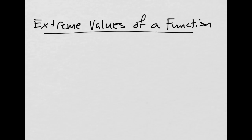We're going to talk about the extreme values of a function. That just means absolute maximums, absolute minimums, local maximums, local minimums, global, relative. Those are all meaning the same thing, and we'll talk about them.